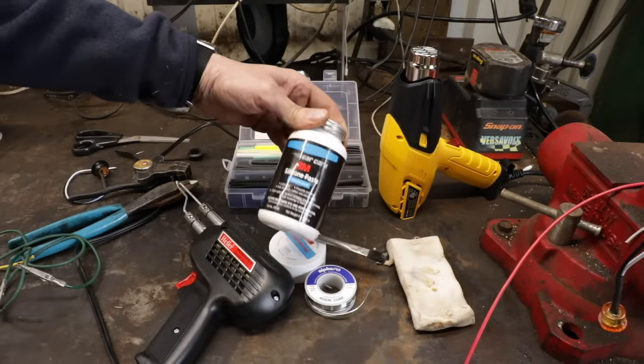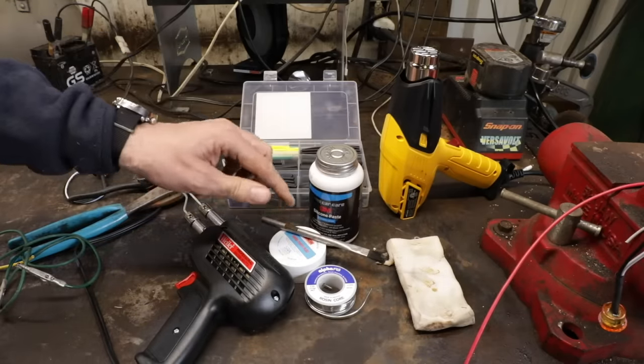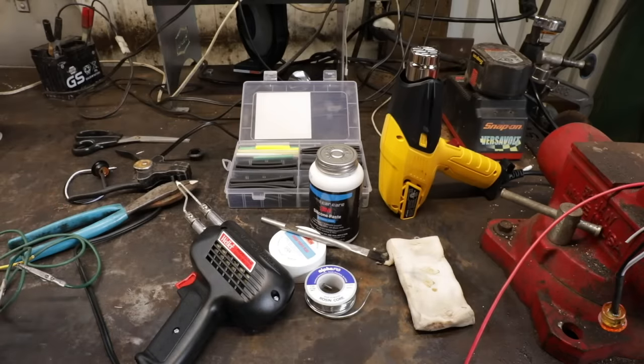And this right here, this stuff's amazing. This is a 3M silicone dielectric grease type of thing that we use, as well as a good selection of shrink tubing. So let's show you how to prep it and then we'll go through the whole process here.